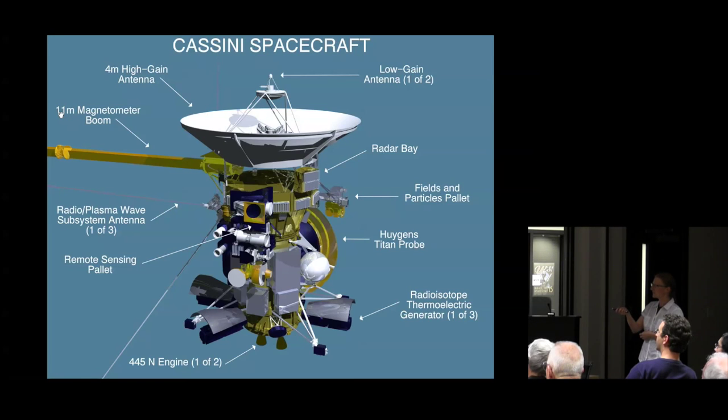We have a magnetometer boom, the radio and plasma subsystem, and CDA which is a cosmic dust analyzer that collects particles and samples what they are made of, where they're coming from, and directional impact so we can do in situ measurements. We have the fields and particles palette and the 4 meter high gain antenna which is primarily used to return data to Earth.